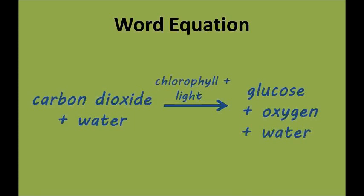The things on the left side of the arrow are what we start with, the things on the right side of the arrow are what we end up with, and the things above the arrow are what we need to make the chemical change happen.